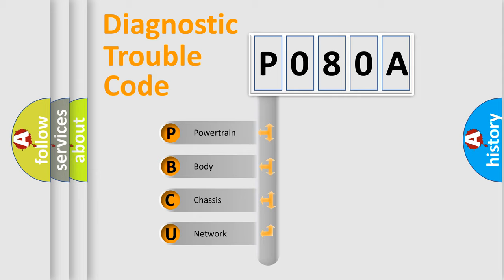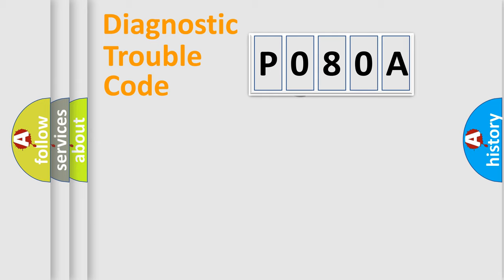We divide the electric system of automobile into four basic units: Powertrain, Body, Chassis, and Network. This distribution is defined in the first character code.